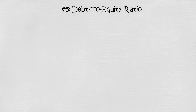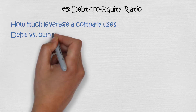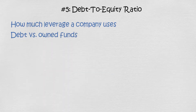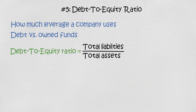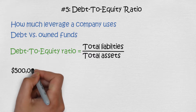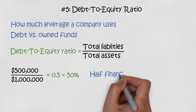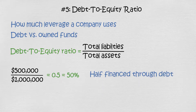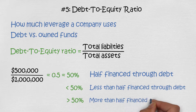Financial ratio number 5: debt to equity ratio. The debt to equity ratio shows us how much leverage a company uses — how much of its operations are financed with debt versus owned funds. It's calculated by dividing total liabilities by total assets. For example, with $1 million in assets and $500,000 in liabilities, the ratio is 0.5, or 50%. This means half the assets are financed through debt. If under 50%, more assets are equity-financed; if over 50%, most are debt-financed.